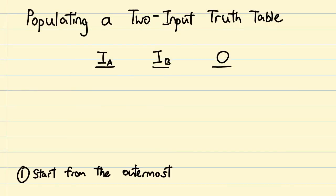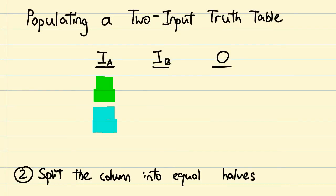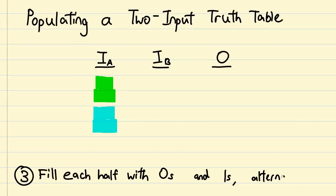Always start with the outermost column. Now there are 4 rows, half of them must be 0s, and the other half must be 1s. This means 2 0s, 2 1s.